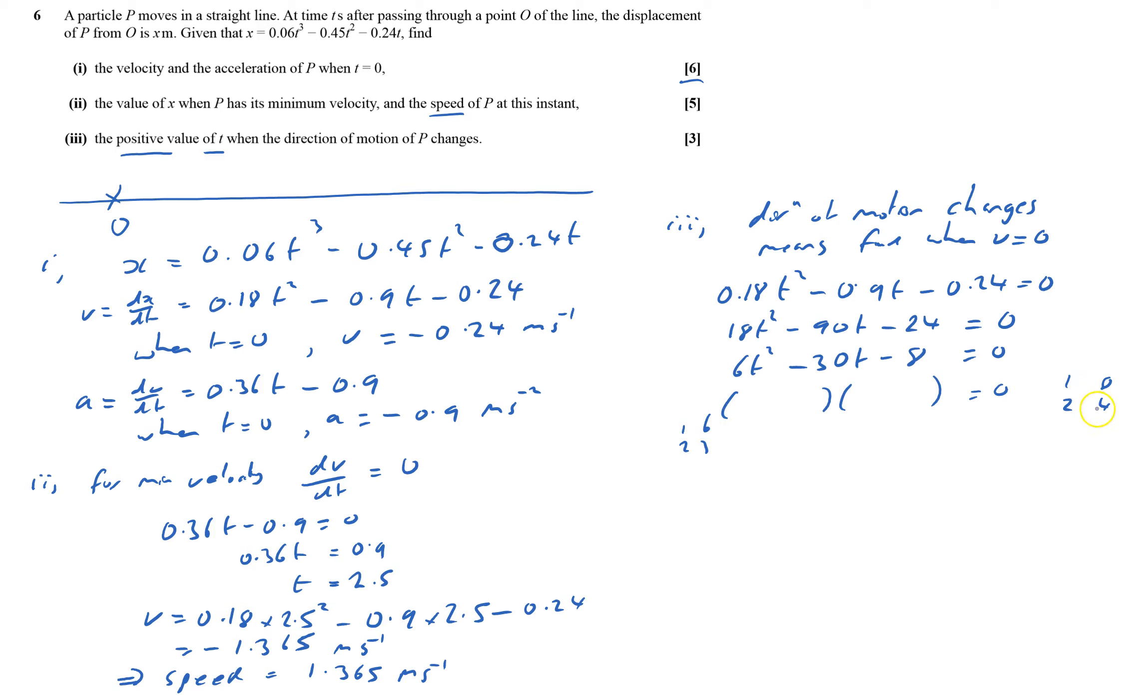So times these together, 6 times 8 is 48. No, 6 times 4 is 24. No, 3 times 8 is 24. No, I don't think it's going to factorize. So therefore, I'm going to use the formula. So t equals minus b, so it's 30 plus or minus square root of 30 squared minus 4 times a, which is 6, times c, which is negative 8, all over 2 times 6.